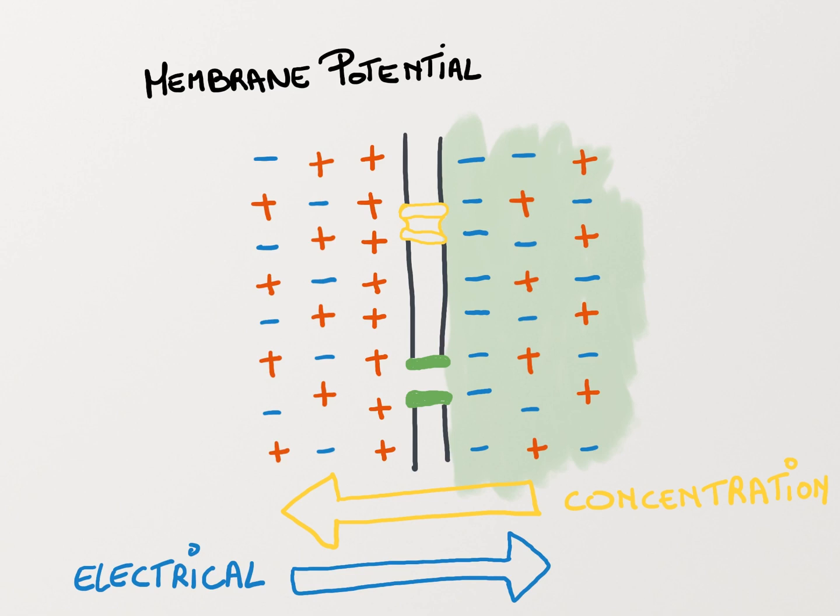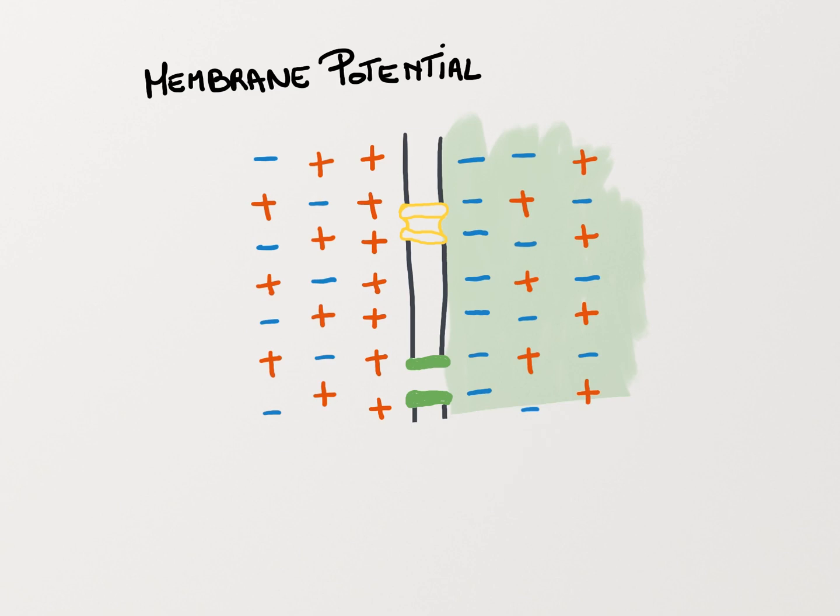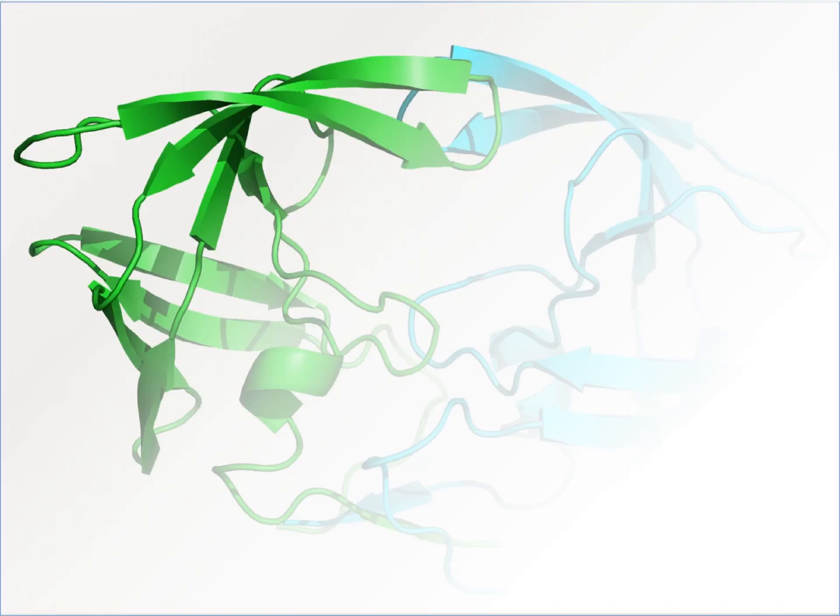A point will be reached where the electrical gradient and the concentration gradient are balanced, and at that point, no further net movement of potassium ions will occur. The amount of charge present on both sides of the membrane when this equilibrium point is reached determines the cell's resting membrane potential.